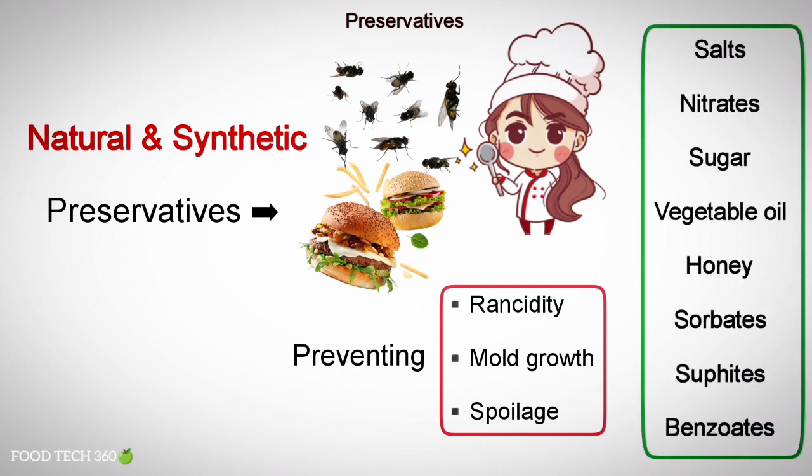Salts, nitrates, sugar, vegetable oil, honey, sorbates, sulfates, and benzoates are some of the widely used preservatives.